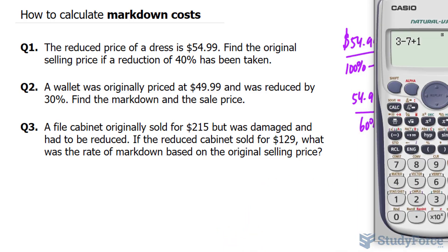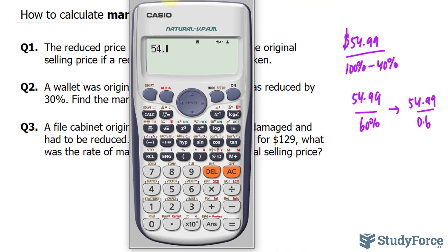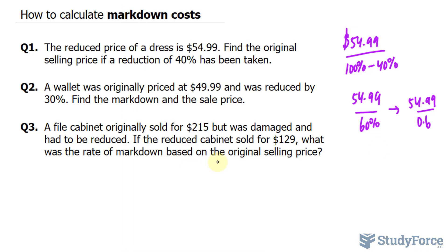If we divide out these numbers, $54.99 divided by 0.6, we end up with the original cost of the item, which was $91.65.